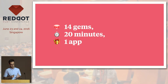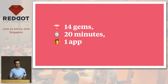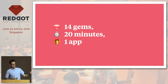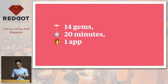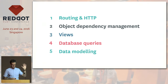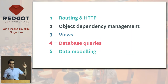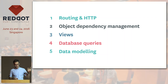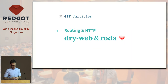So let's take this technique and build a whole web app around it. We'll build the typical blog post example app — a GET request so we can see reading data, and a POST request so we can see writing data — and we'll look at these step by step, building them up layer by layer. We'll need to do five things to tackle the GET: handle routing and HTTP, look at object dependency management, render some views, query the database, and model the data coming back from that database.